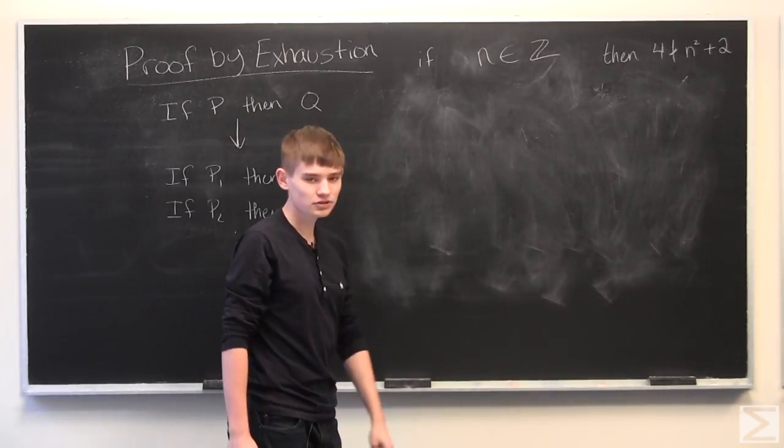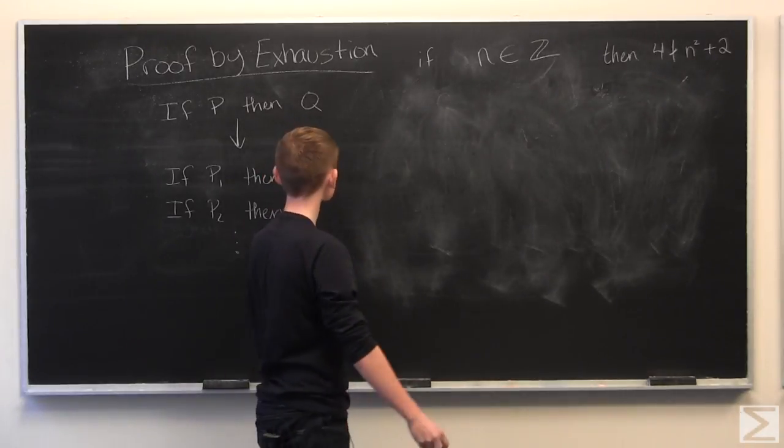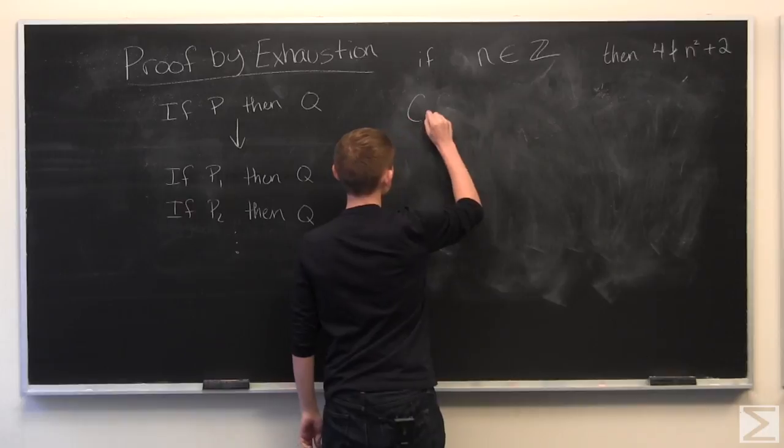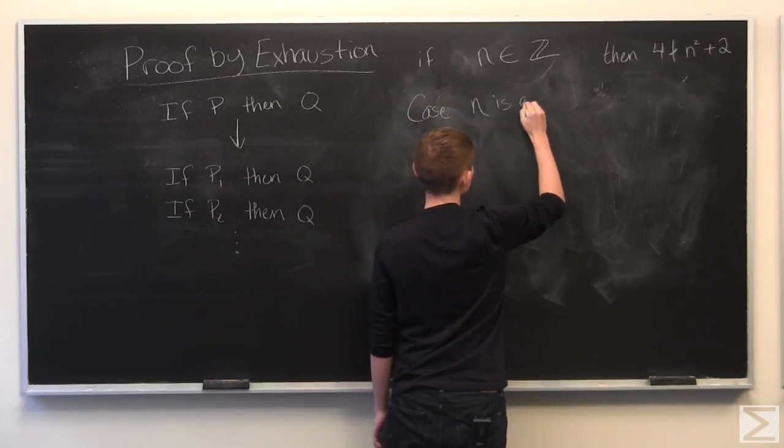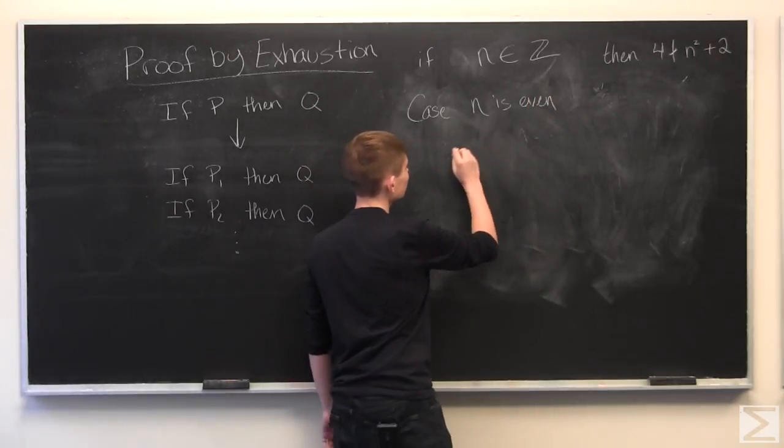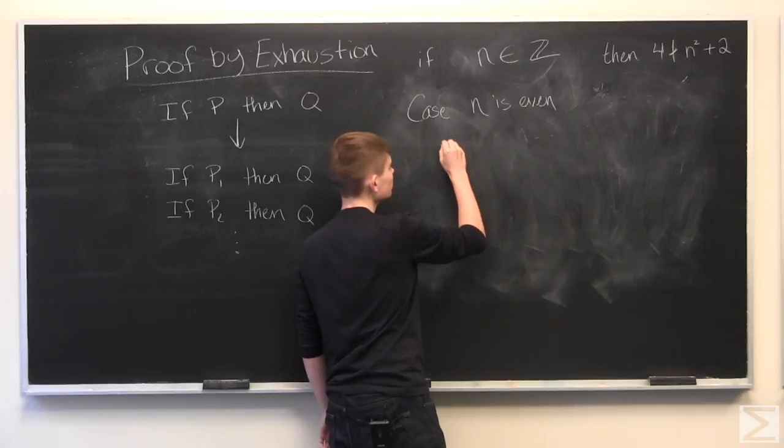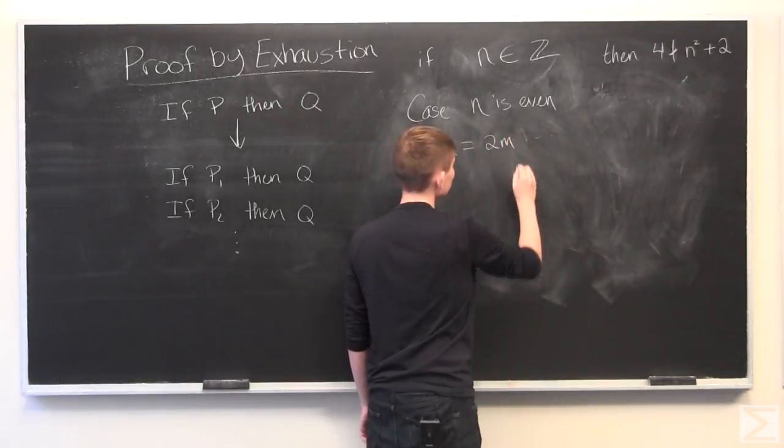And to do this, we're just going to break it up into slightly more broader cases. And so for case 1, let's say that N is even. And using our definition of even, we'll just define N equal to 2M.